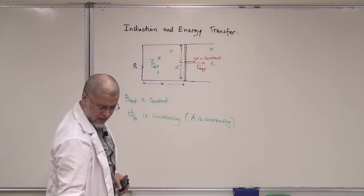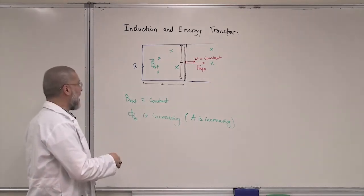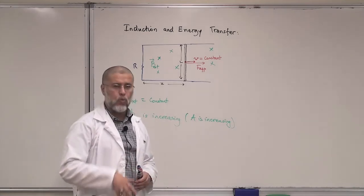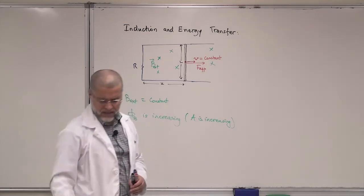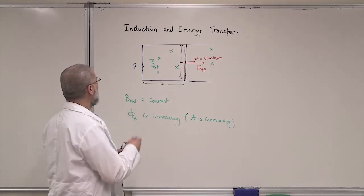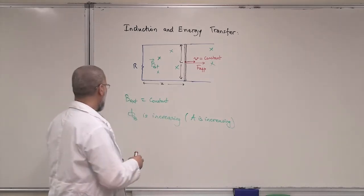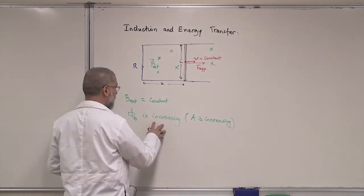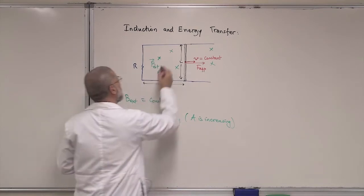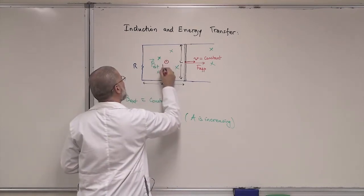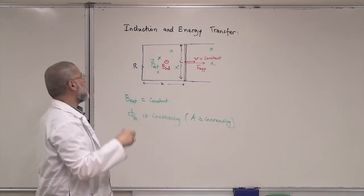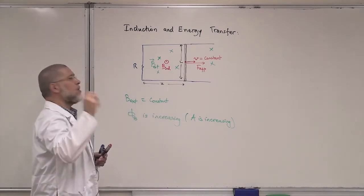So if A is increasing, there will be an induced current, an induced EMF, and an induced magnetic field. Can you tell me what is the direction of the induced magnetic field? Since phi B is increasing, the induced magnetic field will be opposite to the external one — it will be coming out. That's B induced.